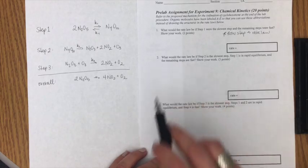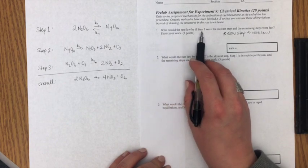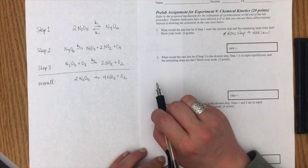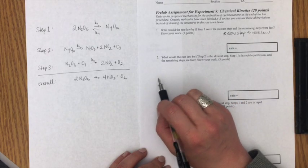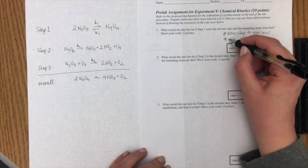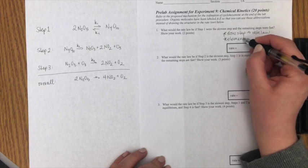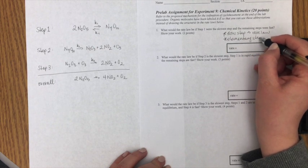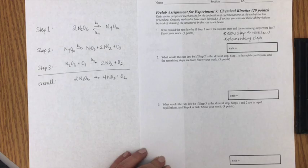So the first question on my assignment asks what would the rate law be if step one were the slowest step and the remaining steps were fast. So my slow step is correlated to the rate law and I'm going to treat these as if they were elementary steps. Meaning I use the stoichiometry of the reaction to determine the order of the reaction with respect to a specific reactant.